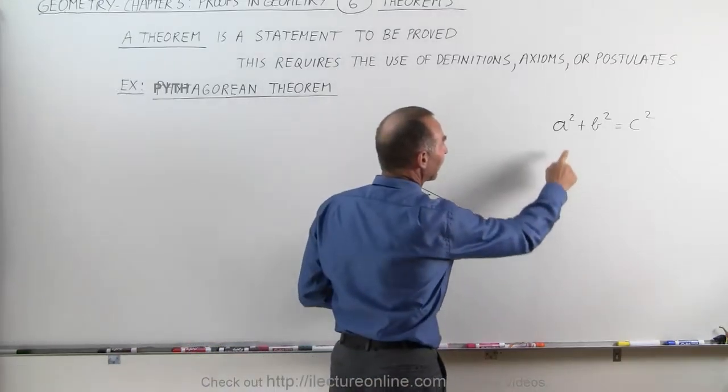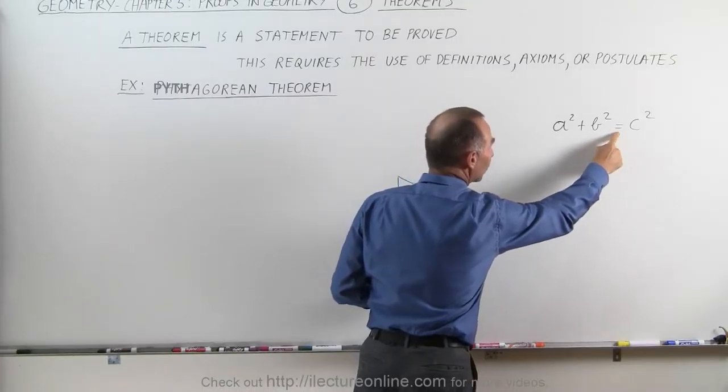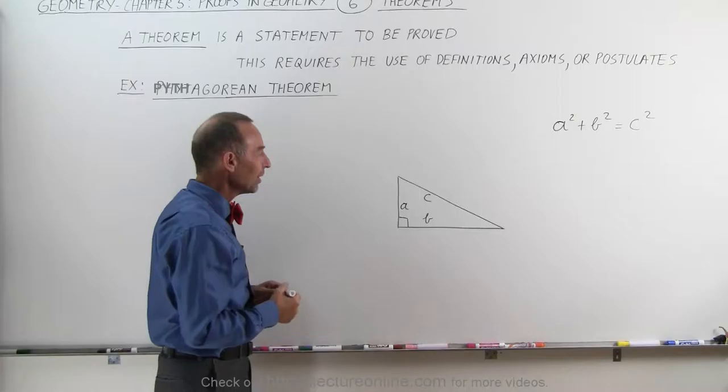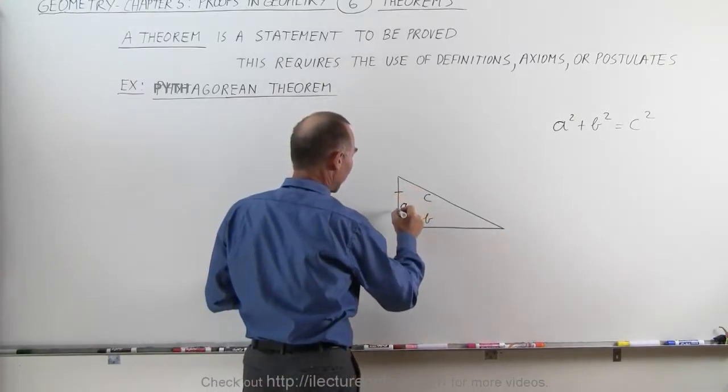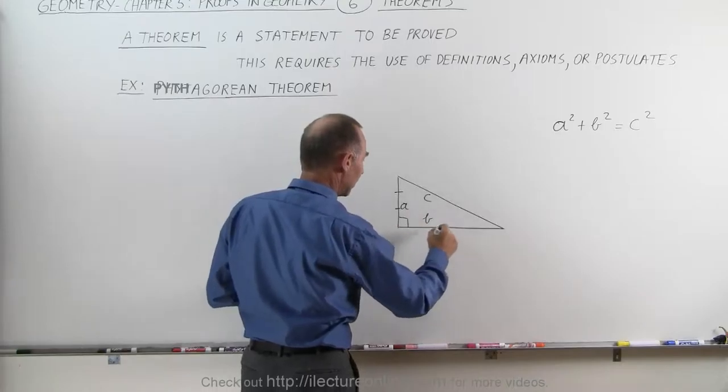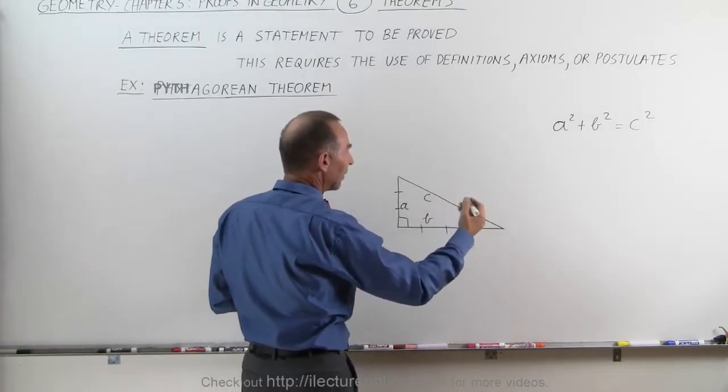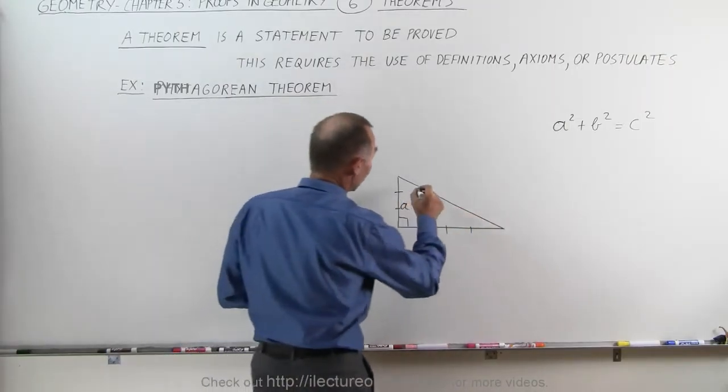Pythagorean theorem tells us that one side squared plus the second side squared equals the hypotenuse squared. An interesting way of proving that would be to say, let's say that this triangle has a side A which is three units long and side B is four units long. Then the theorem claims that side C must therefore be five units long.